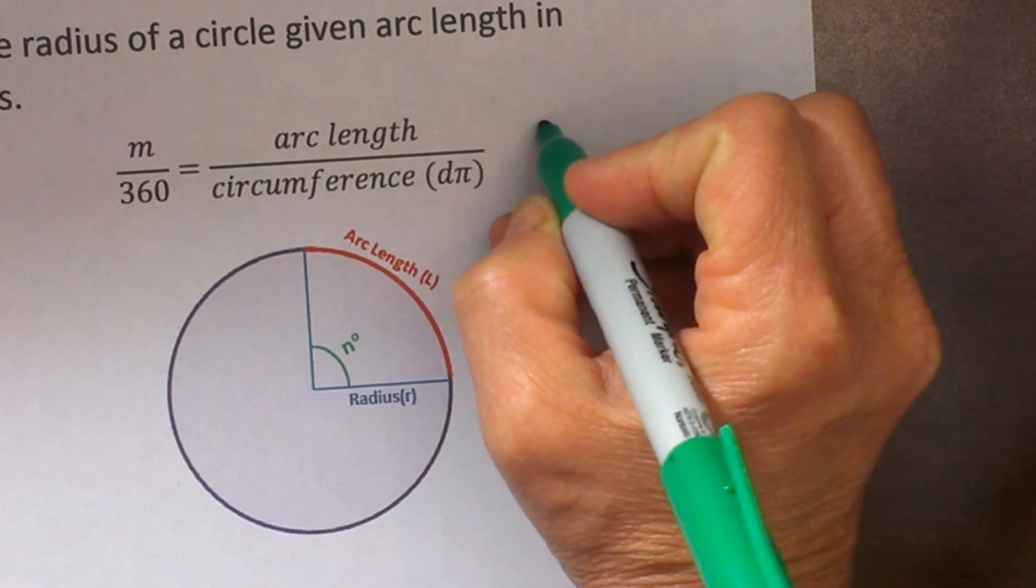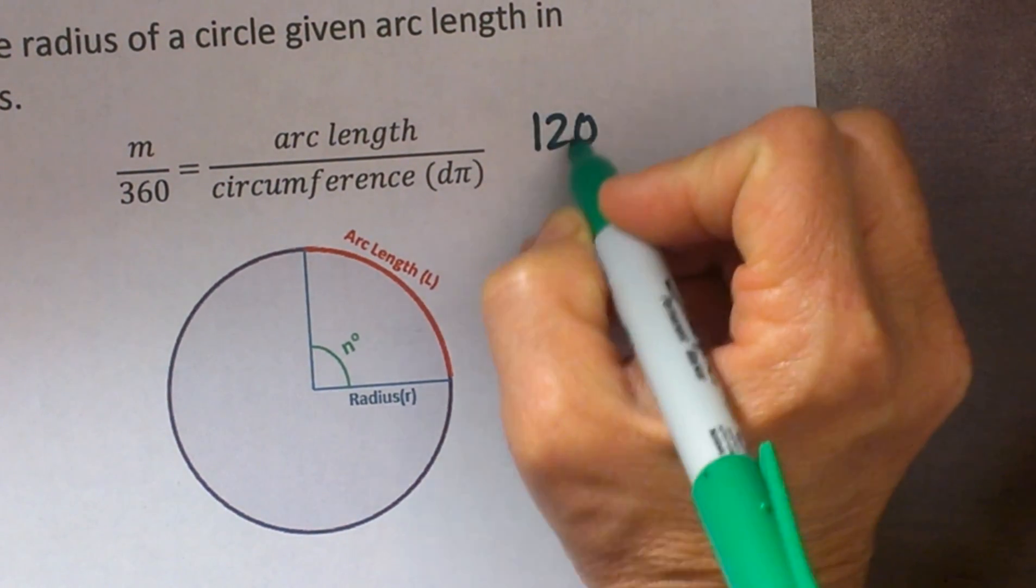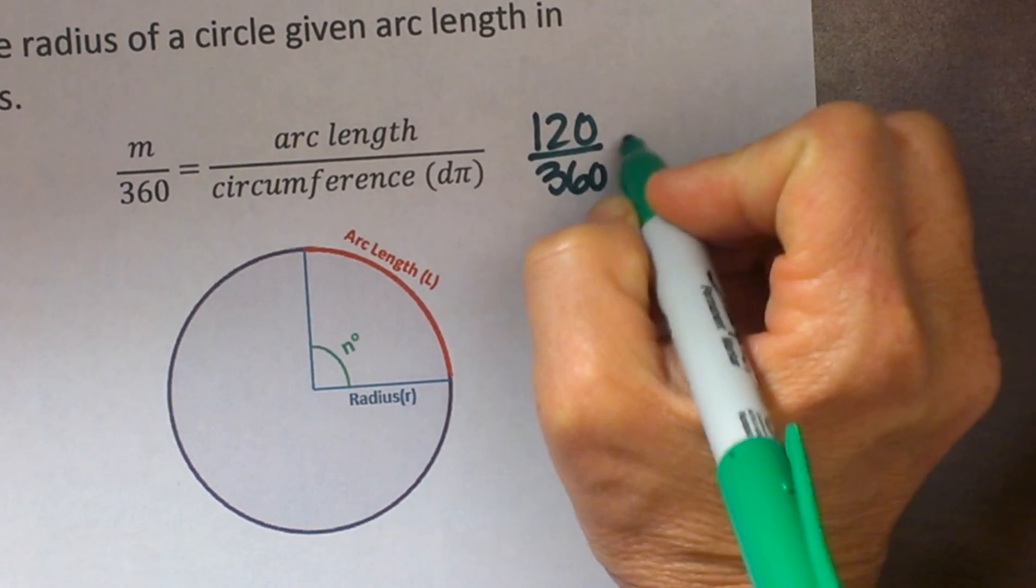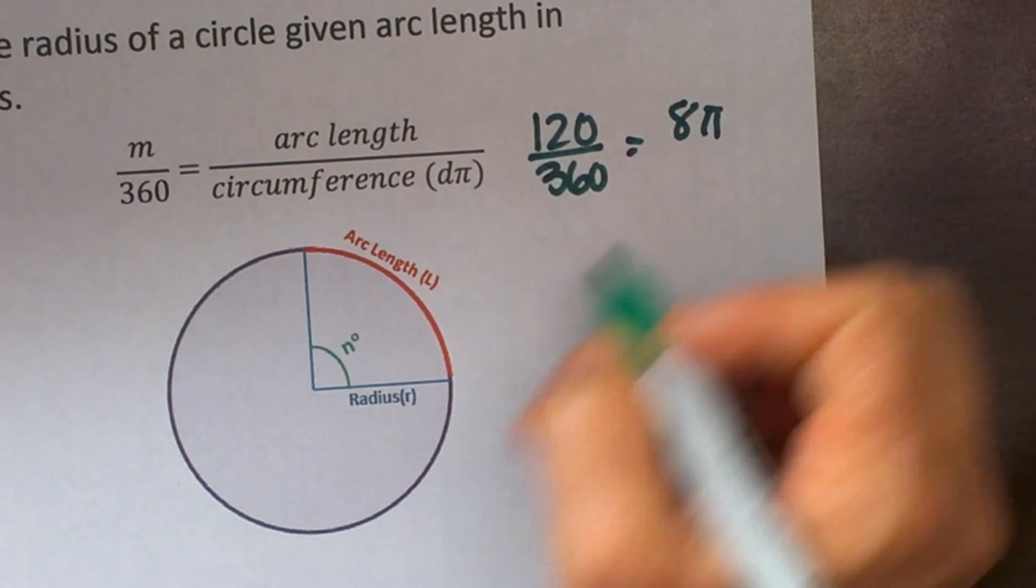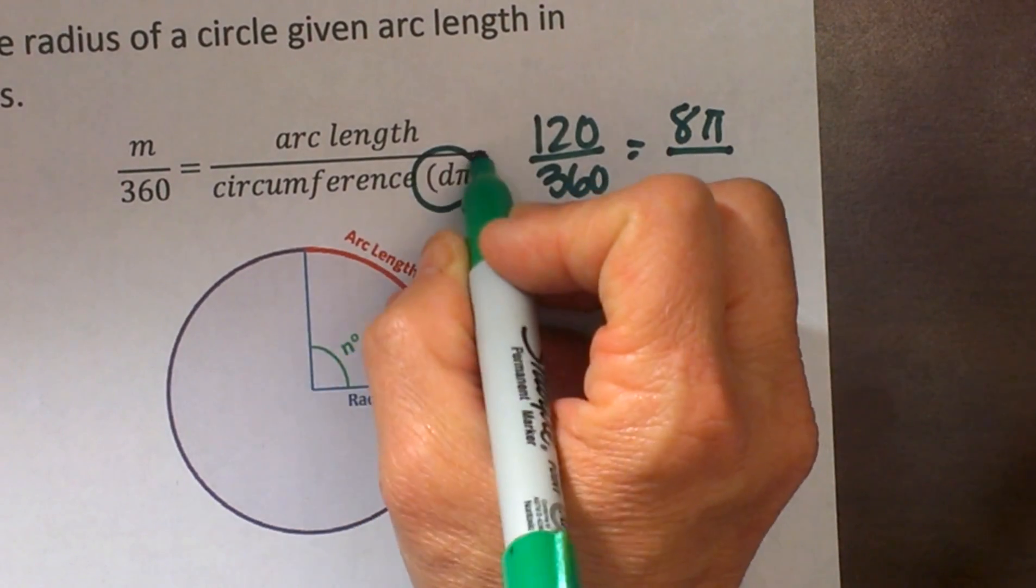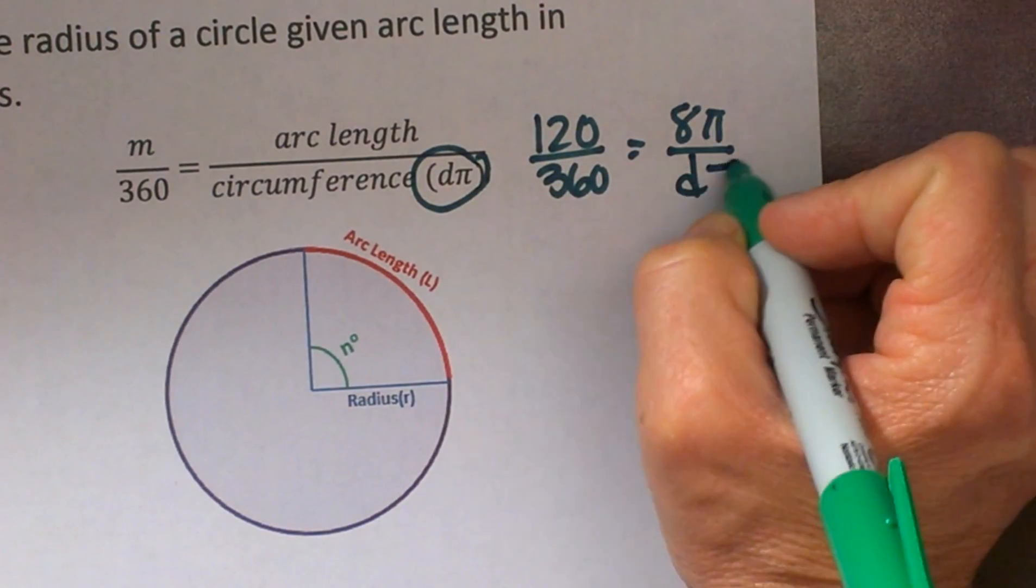Let's plug in what we know. We are going to take 120 over 360 and we are going to set it equal to 8π over our circumference. I am going to keep this formula as dπ because that is our formula for dπ.